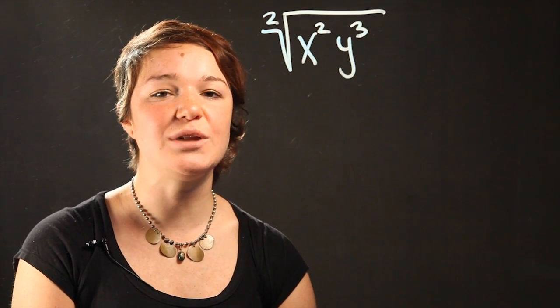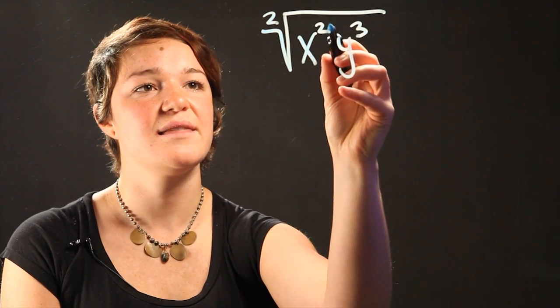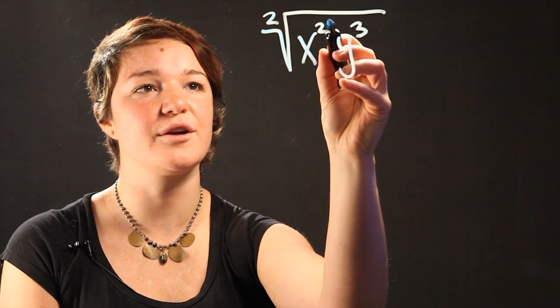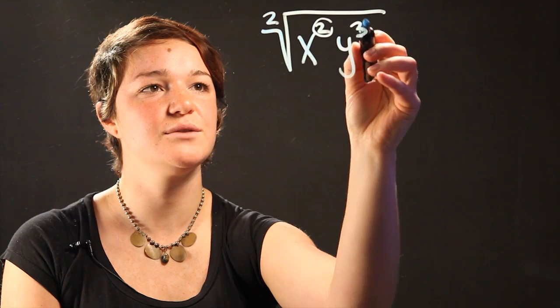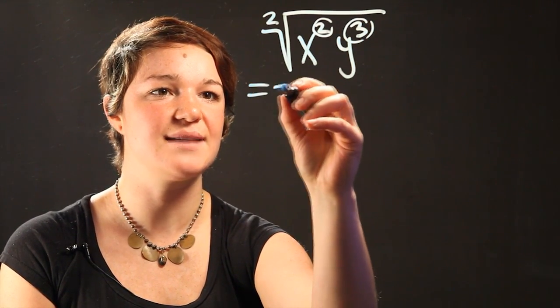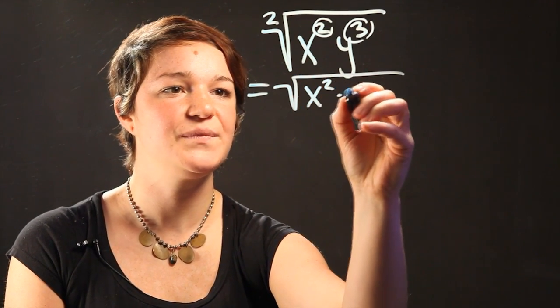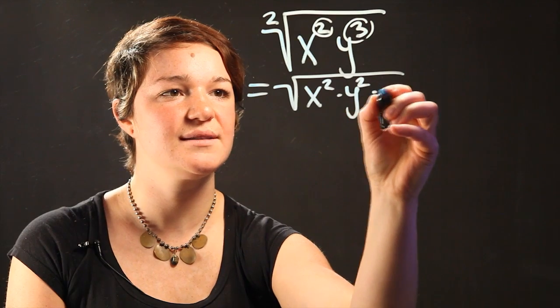So that means we can pull out variables outside of the radicand that have powers of 2 or bigger. So here we have a 2, we have a 3 here. Now another way of looking at this expression is by saying that it's the radical of x squared times y squared times y.